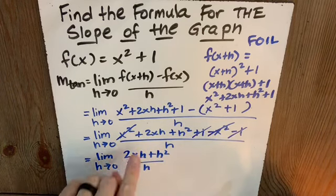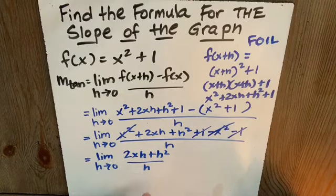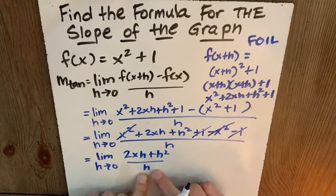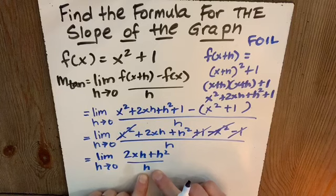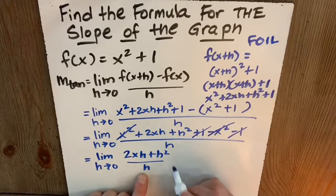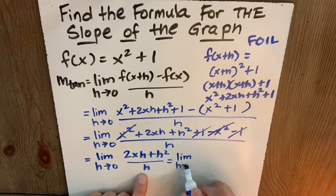Which gives us the limit as h approaches 0 of 2xh plus h squared divided by h. Now, let's just do this mentally. If we put in a 0 for h in all three cases here, we're going to get that indeterminate form 0 over 0, which means we have to have a plan B, which means we're going to, in this case, use the dividing out technique that we're so good at.